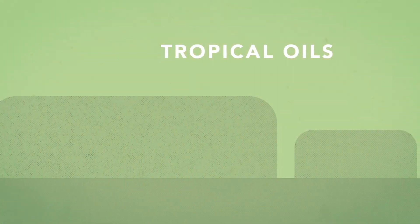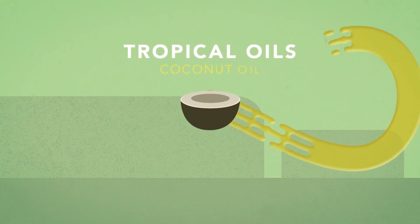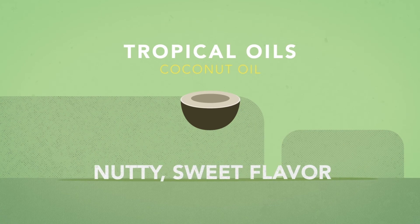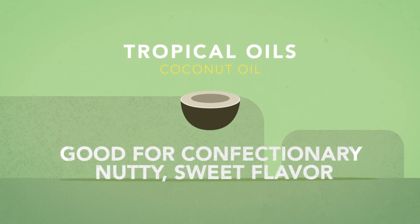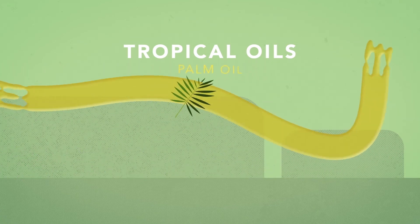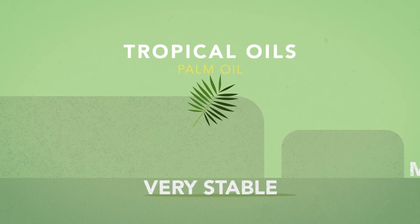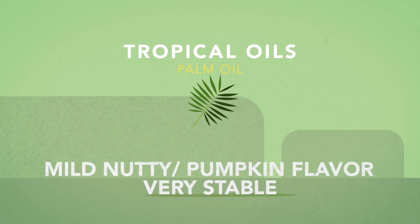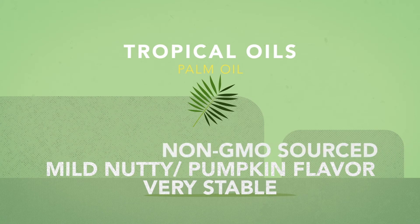Lastly, we have the tropical oils, like coconut, which has a nutty, sweet flavor and is good for confectionery. And palm, which is very stable and has a mild nutty or sweet pumpkin flavor. Both are non-GMO sourced.